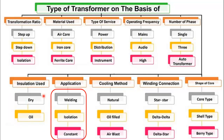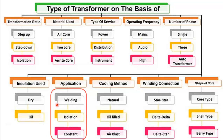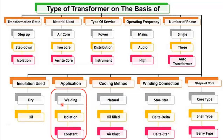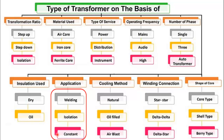The next category is the application, in which we have three different types of transformer. The first is the welding transformer, used for welding purposes. The next is the isolation transformer, where the secondary and primary windings have the same turns and a turns ratio of 1. The last type is the constant type, used for voltage stabilizers.